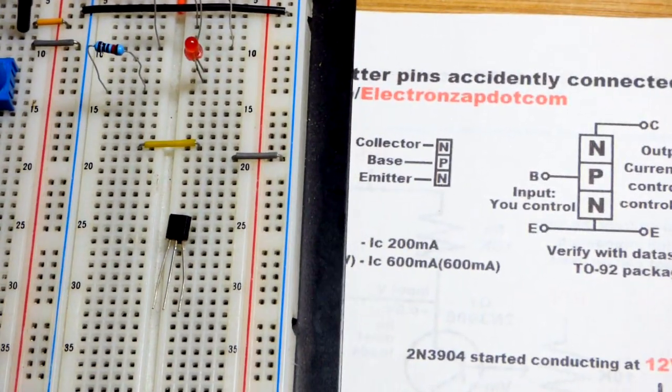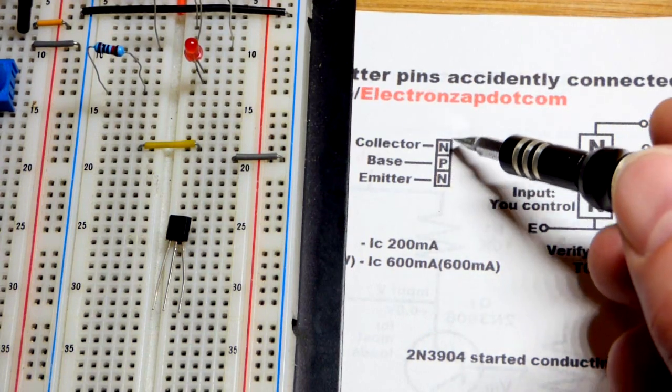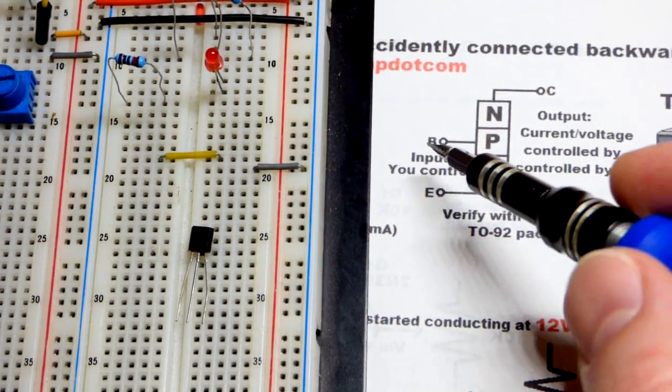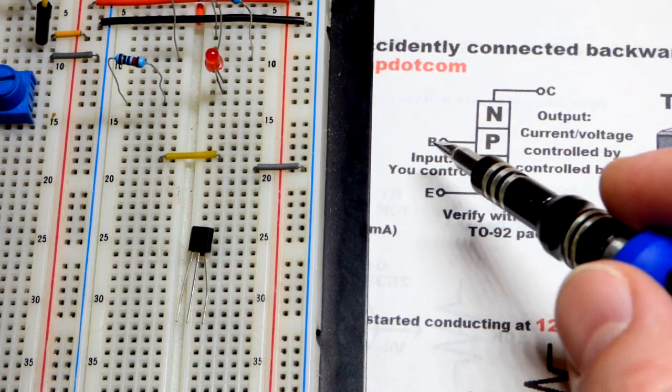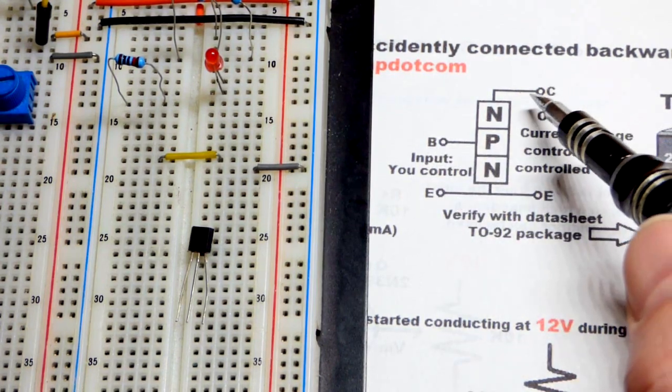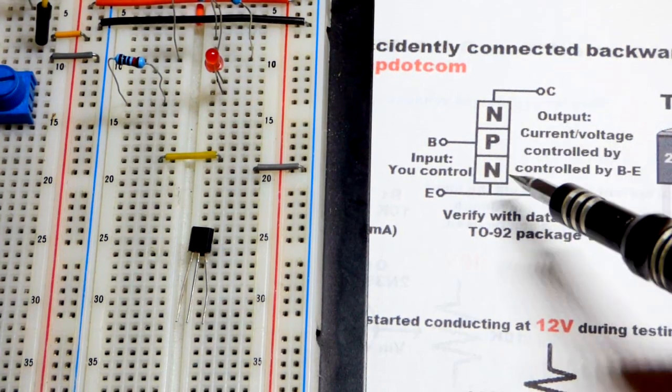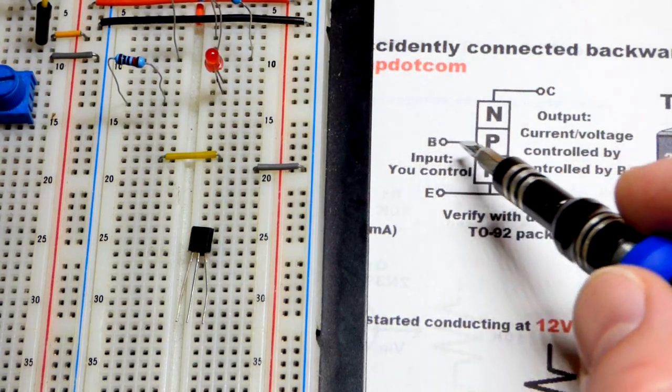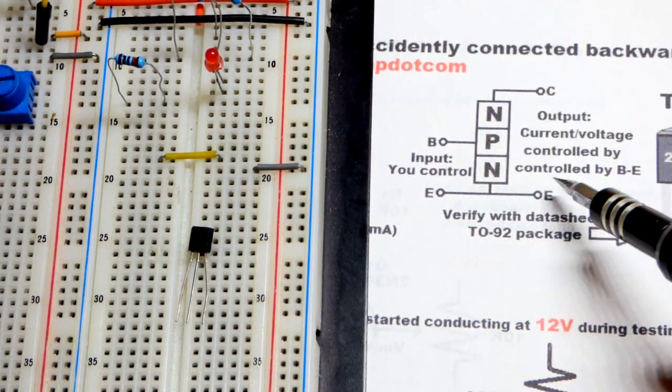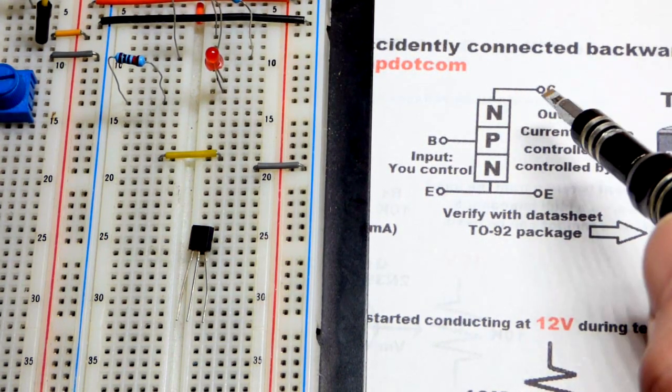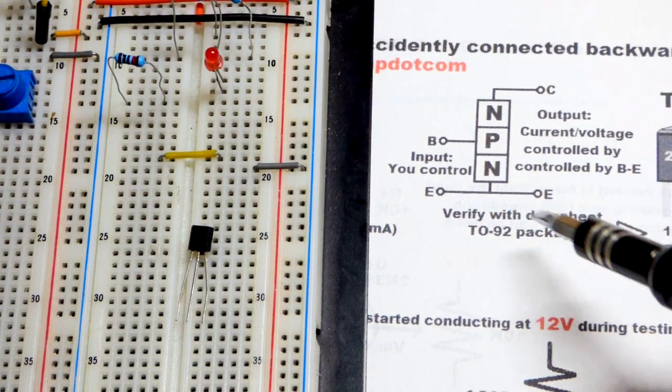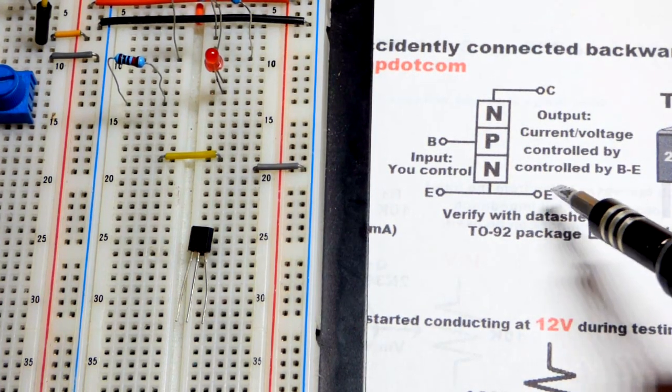It's an NPN bipolar junction transistor. So there's P-type material sandwiched between 2 N-type material. The way you normally use it is that you provide a voltage and possibly a current to the base to emitter. And that's how you control how much current can go from collector to emitter. The main takeaway is you give the base to emitter a certain amount of current, and it's going to let through probably two or three hundred times as much current from collector to emitter. That's why it's an amplifier. You get more current.